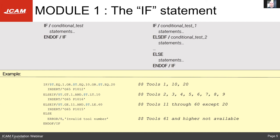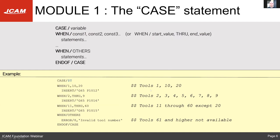The CASE statement looks at the variable value and jumps straight to the matching case. Compared to the IF statement, which processes each conditional test in order until it finds a true one, the CASE statement will go directly — for example, tool 30 goes straight to the 11-through-60 case. Essentially IF and CASE are the same thing, just structured differently.